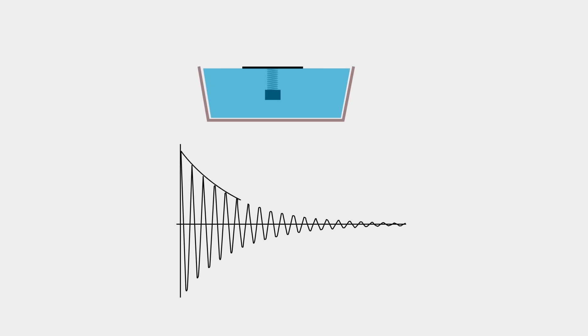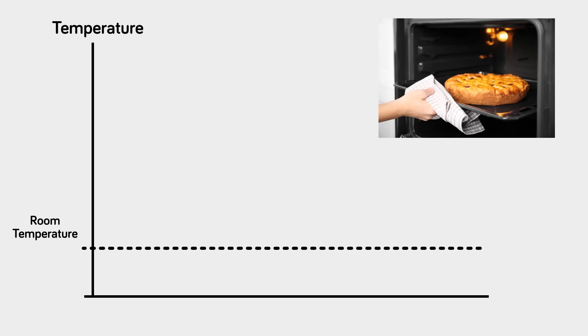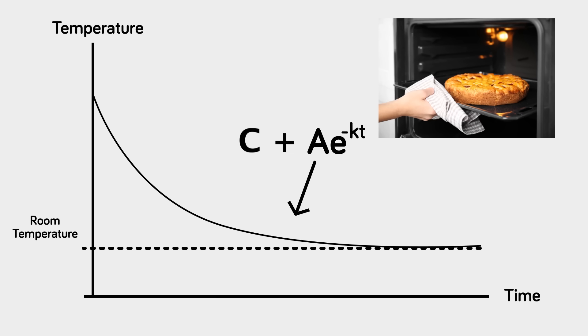As more real-world examples: when you let a block on a spring oscillate in fluid, it oscillates back and forth with a slightly lower amplitude every time. The envelope of this equation has an exponential decay equation which includes E to some negative constant times time. Or when you take a pie out of the oven, it cools down much faster at first, then the temperature flattens out, asymptotically approaching room temperature — the same exponential decay with E to the power of some negative value times time.